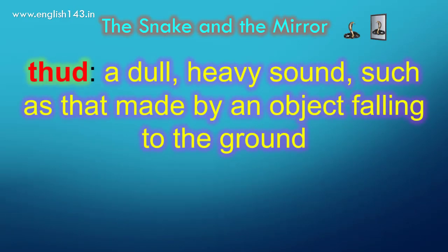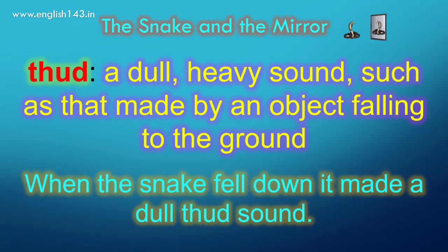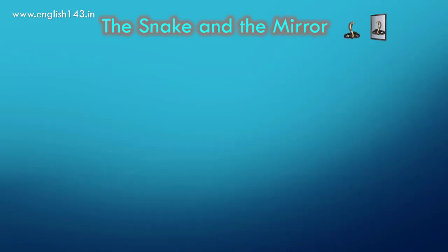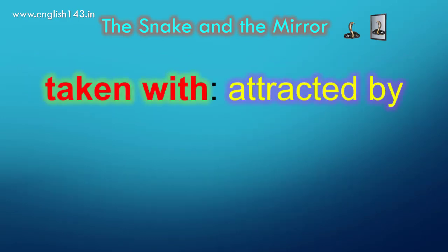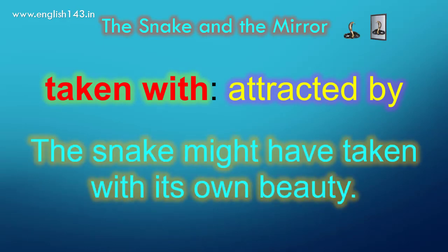Thud is a dull, heavy sound such as that made by an object falling to the ground. When the snake fell down, it made a dull thud sound. Taken with means attracted by. The snake might have been taken with its own beauty.